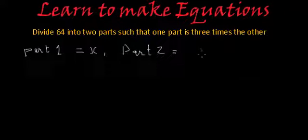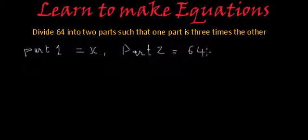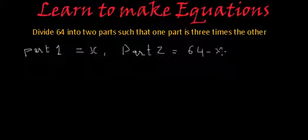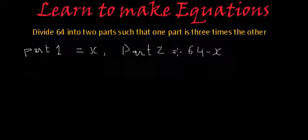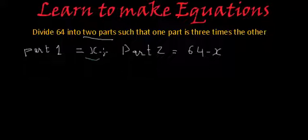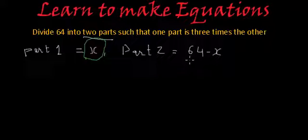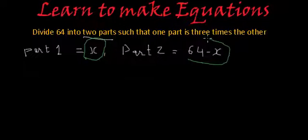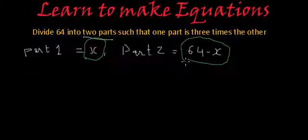Part 2 will be 64 minus x. Now let's read this again and see what actually the relation is. We have to divide 64 into two parts such that one part is three times the other. That means the relation between these two parts, x and 64 minus x, is such that one is three times the other.